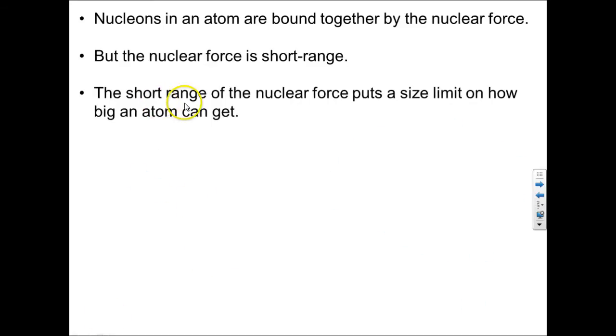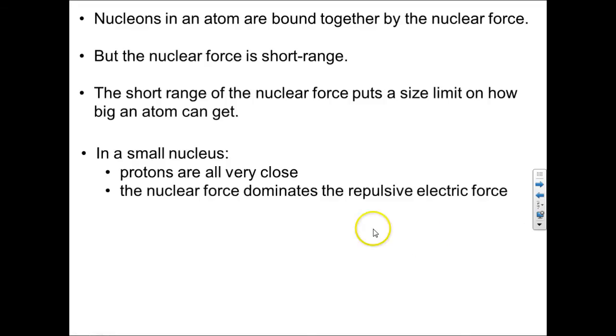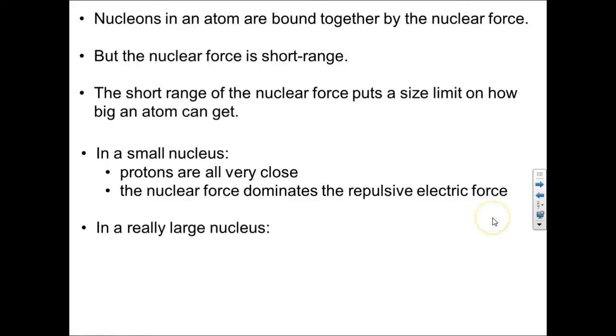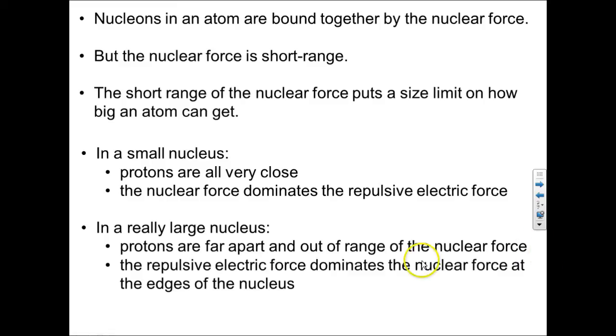So this short range of the nuclear force puts a size limit on how big atoms can get. In a small nucleus, the protons are all very close, and the nuclear force dominates that repulsive electric force. But in a really large nucleus, the protons are far apart, and they're out of range of the nuclear force at the outskirts, or the edges of the nucleus. So at those edges, the repulsive electric force dominates the nuclear force. And in fact, the biggest you can get before nucleons start getting ejected is around 300. So no nuclei have more than about 300 nucleons.